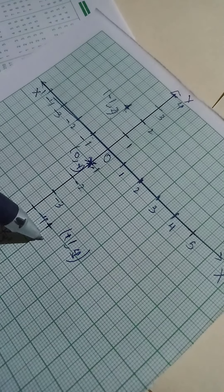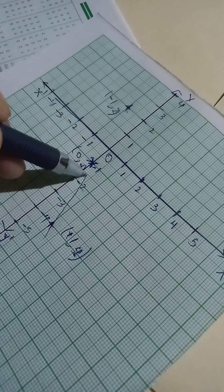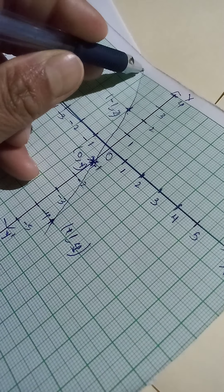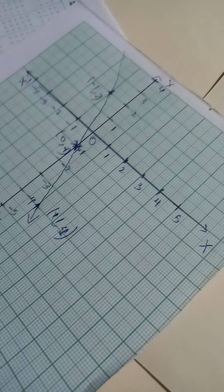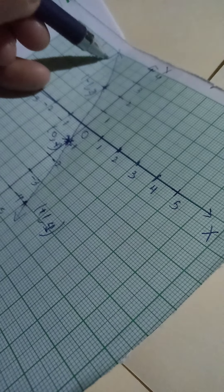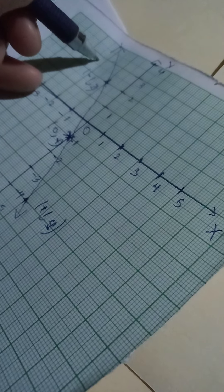So now you join it using your ruler. You see you get a straight line. Please join using ruler. Then you write it. This is a graph for equation 1.